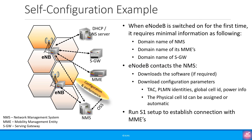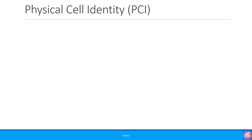When we looked at the self-configuration example in the last video, we saw that the base station contacts the network management system or NMS and downloads the basic configuration parameters like the TAC, PLMN identities, global cell ID, power information, etc. The physical cell ID can be assigned or it can be automatic. So let us quickly look at and understand PCI or Physical Cell Identity.